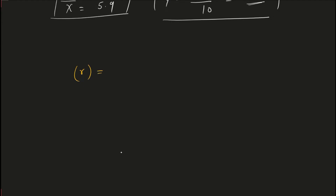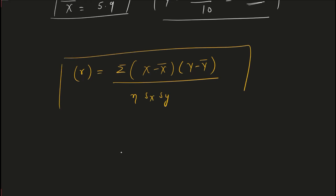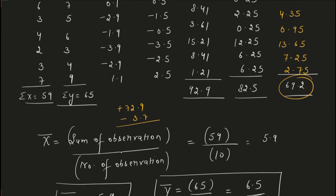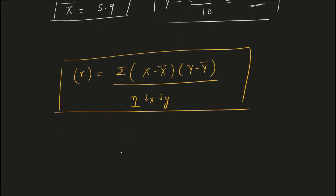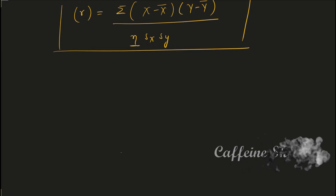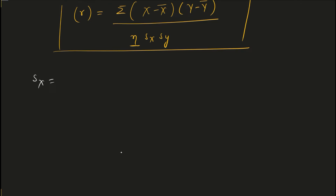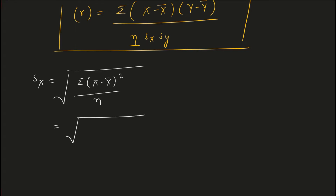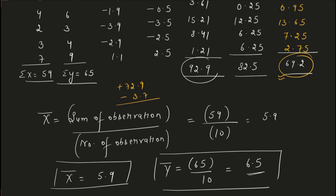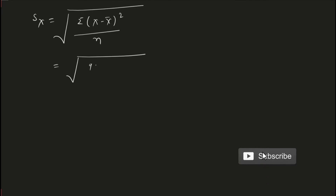The formula for r is: summation of (x minus x̄)(y minus ȳ) divided by n × sx × sy. We have n = 10 (number of terms). The summation of (x minus x̄)(y minus ȳ) we just found. Now sx and sy are the standard deviations of X and Y respectively. The formula for sx is: square root of [summation of (x minus x̄)² divided by n]. The summation of (x minus x̄)² was 92.9, so 92.9 divided by 10.